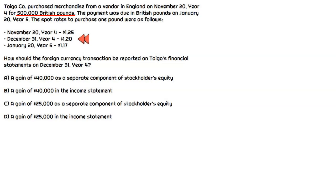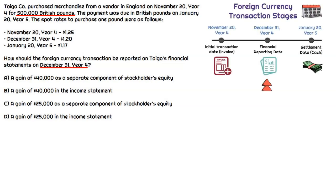The question gives us some spot rates, which we'll use to convert the invoice in pounds to dollars for each of the dates. Ultimately, we need to figure out how the foreign currency transaction should be reported on Toygo's financial statements for December 31, year four. We also have a reporting date in between the invoice date and the settlement date, so we'll need to factor in how that values the invoice as of December 31, year four.